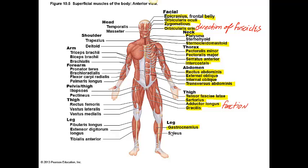In the leg area we have the gastrocnemius muscle and the soleus muscle, both of which are going to have the same function. On the left-hand side of this figure we have the temporalis muscle, the masseter muscle, the trapezius muscle, and the deltoid muscle. The rest of these muscles you do need to know as well.